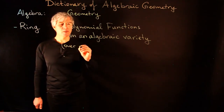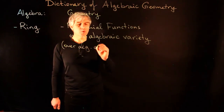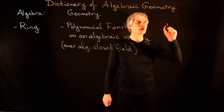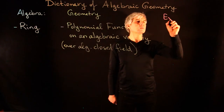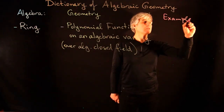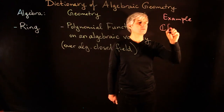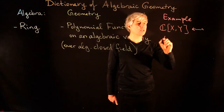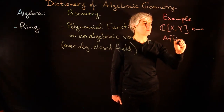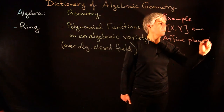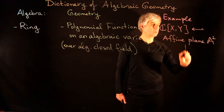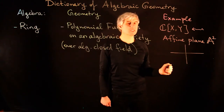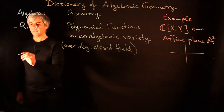As an example, we can take C[x,y]. This corresponds to the affine plane A². Two-dimensional plane taken over the complex numbers. On the algebra side we have the notion of an ideal.